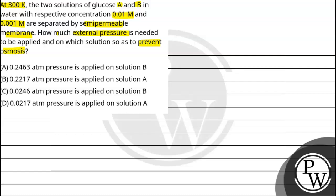The options are: A) 0.2463 atmosphere pressure on solution B, B) 0.2217 atmosphere pressure on solution A, C) 0.0246 atmospheric pressure on B, D) 0.0217 atmospheric pressure on solution A.